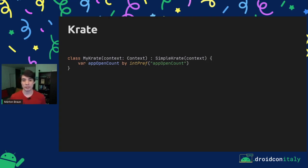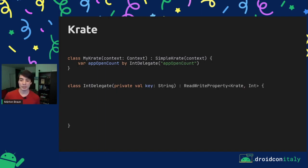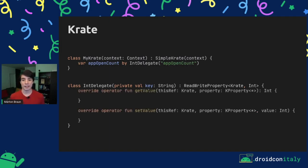Let's take a look at what implementing one of these delegates would look like. We're going to implement the one that stores ints. We start with this syntax where we are clearly delegating the property into an instance of an IntDelegate class. This class will take a key parameter that it will use for storing things in shared preferences. We're going to make it implement an interface called ReadWriteProperty, which is a standard library interface from the Kotlin standard library. It has two methods we have to implement: getValue and setValue. Using this interface is not mandatory, but it does make things a lot easier, so I recommend doing it anyway.